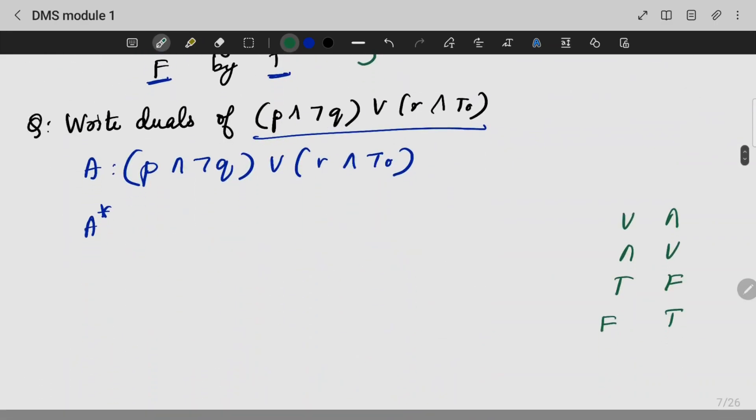So, while we are writing it, we can write the dual as P AND (not Q) OR F. OR is replaced with AND, AND is replaced with OR. This is how you write the dual for any equation, any question.